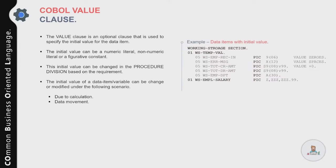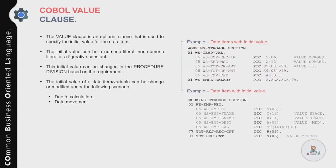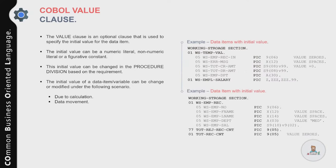Let's look at examples of using the value clause. In the Working Storage Section, we have a group variable WS-TEMP-VARIABLES containing elementary items. WS-EMP-REC-IN is PIC 9(6) with an initial value of 0. WS-ERROR-MESSAGE is PIC X(12) with an initial value of SPACES. WS-TOTAL-CREDIT-AMOUNT has an initial value of +0.